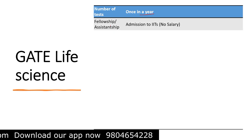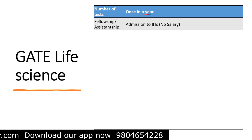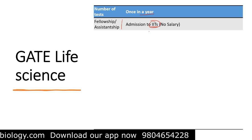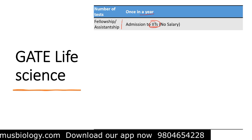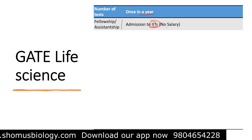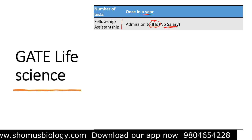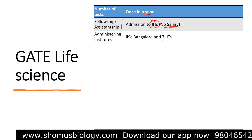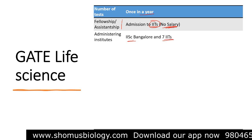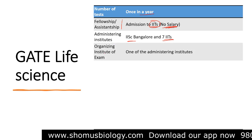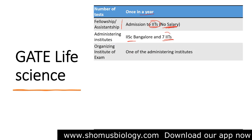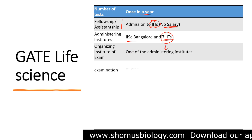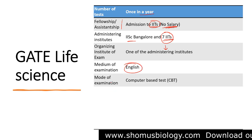The number of tests per year is once for gate life science. If you qualify gate life science, you can directly take admission to the IITs for continuing your master's journey, but there won't be any stipend or fellowship provided. The administering institute can be any one of the seven IITs or IISc Bangalore, and it varies from year to year.